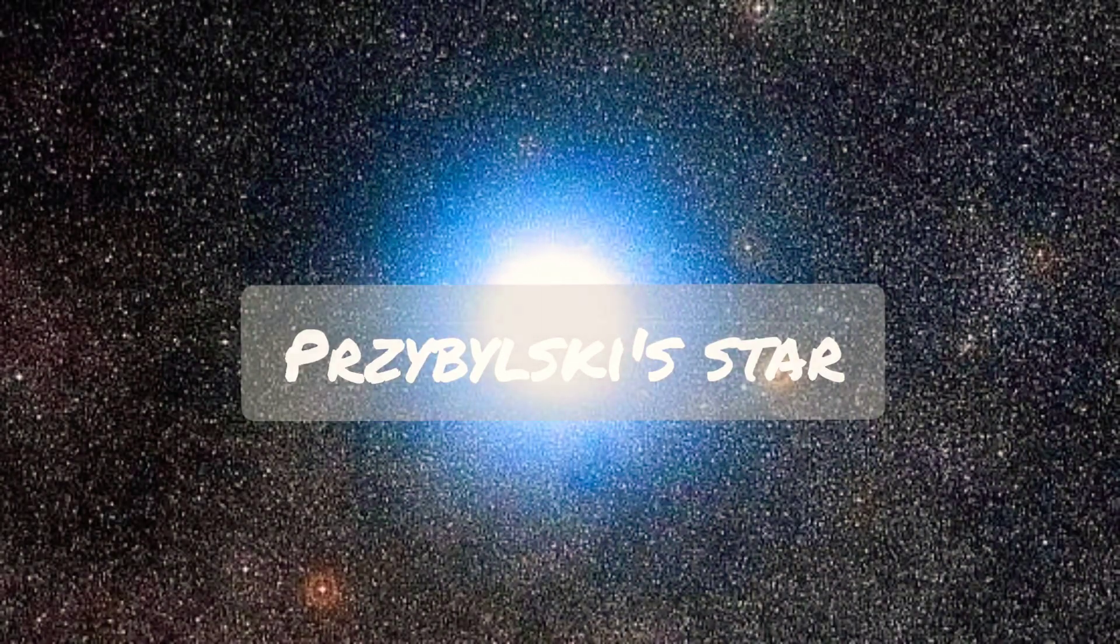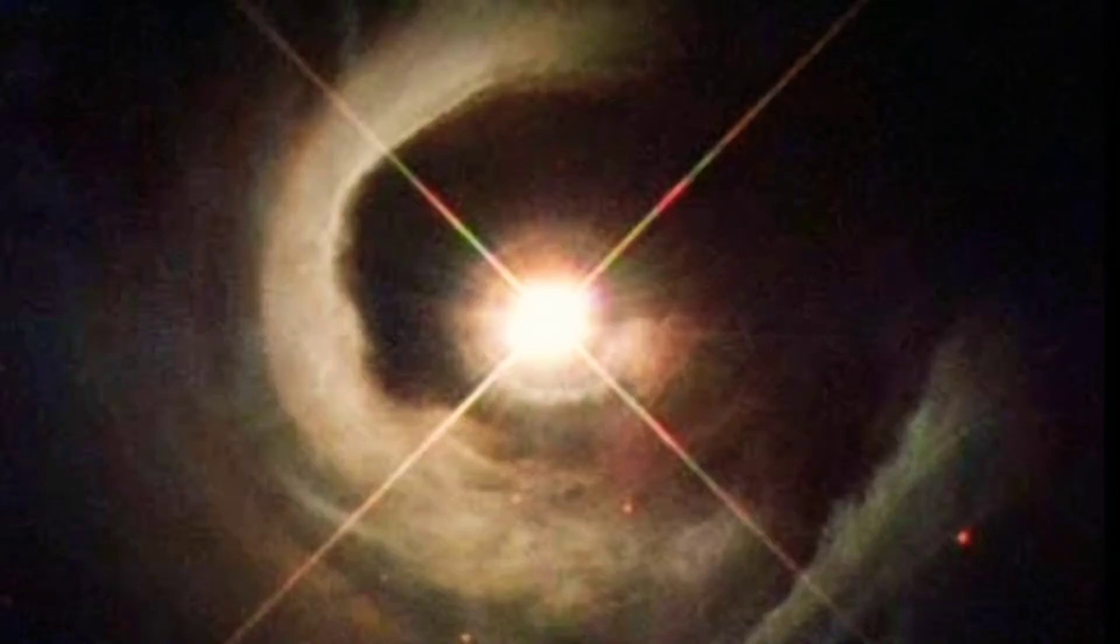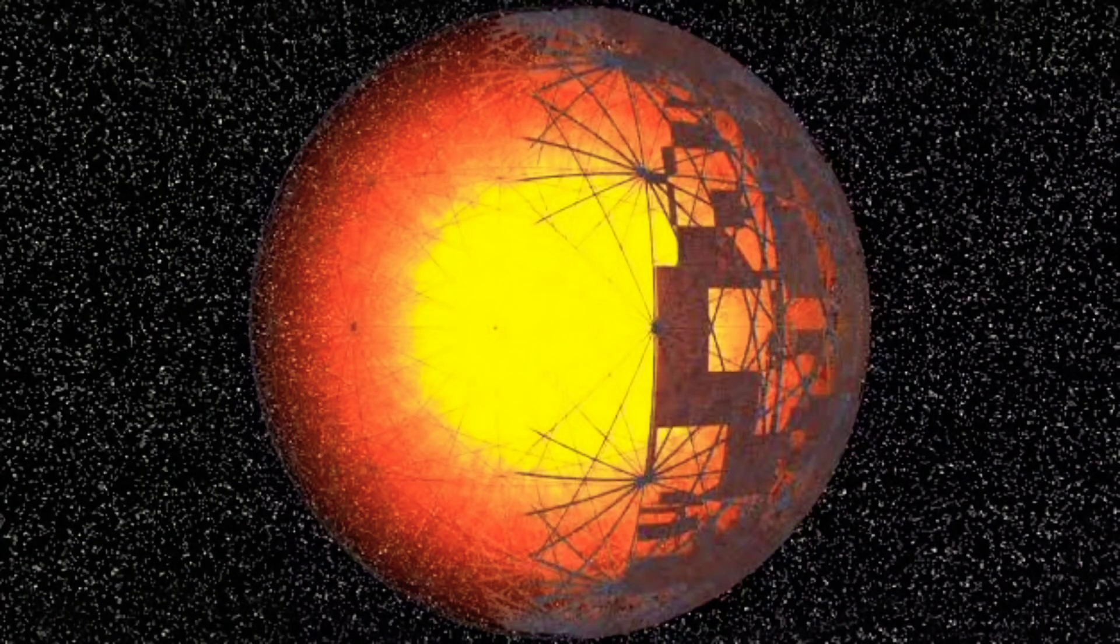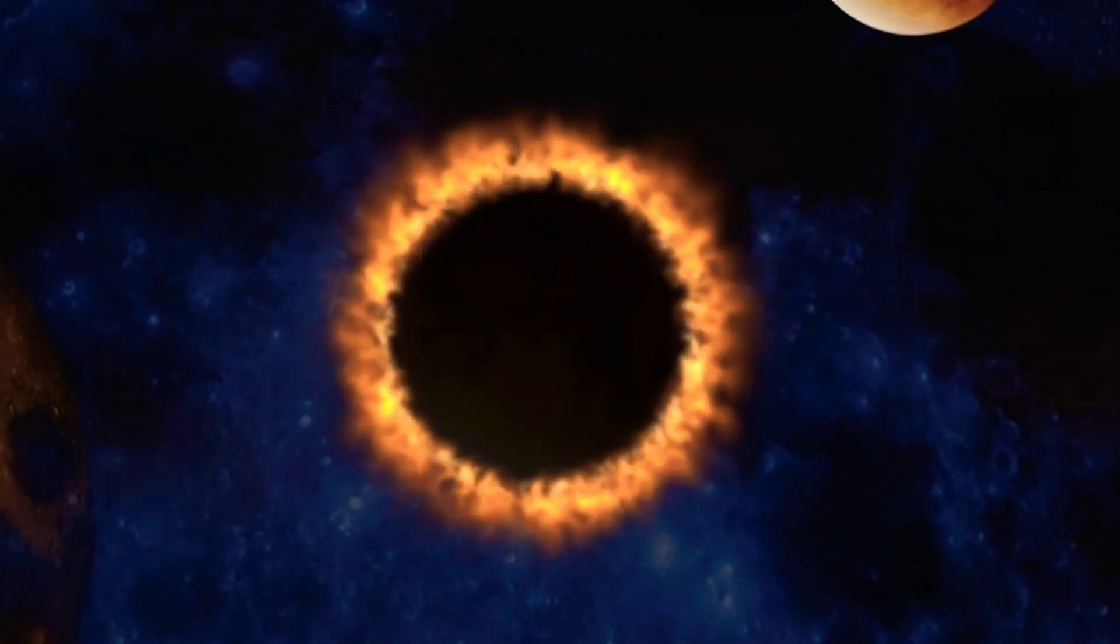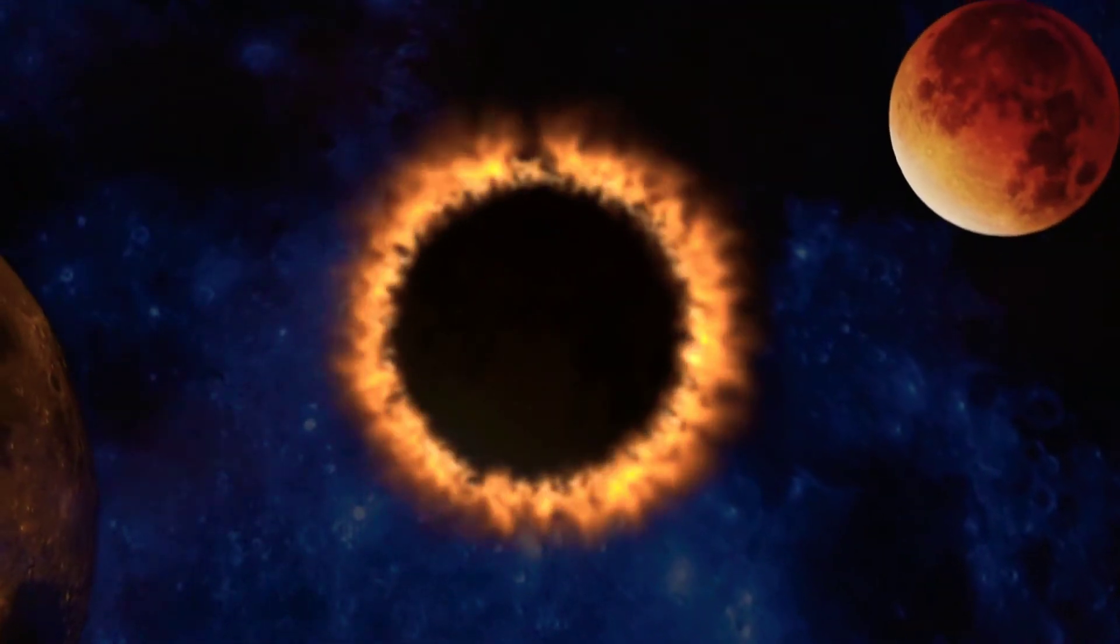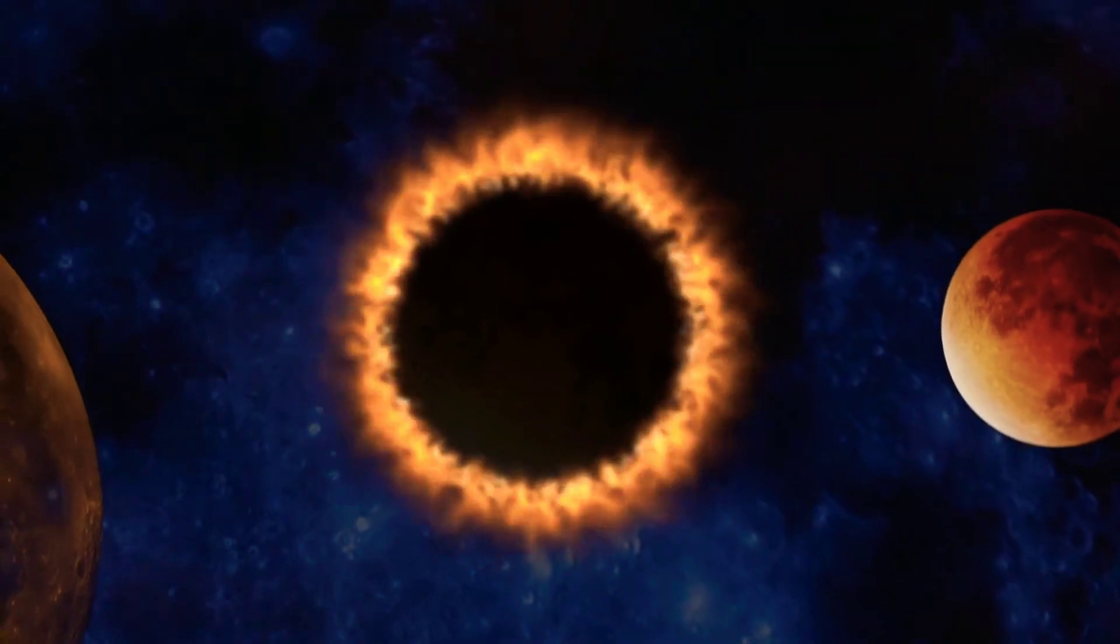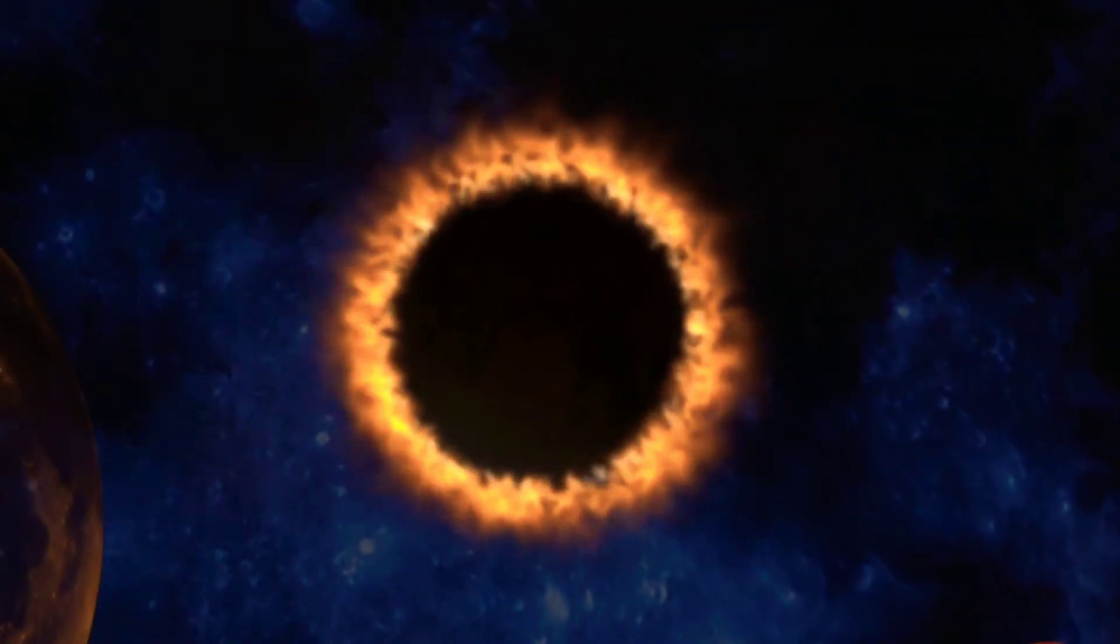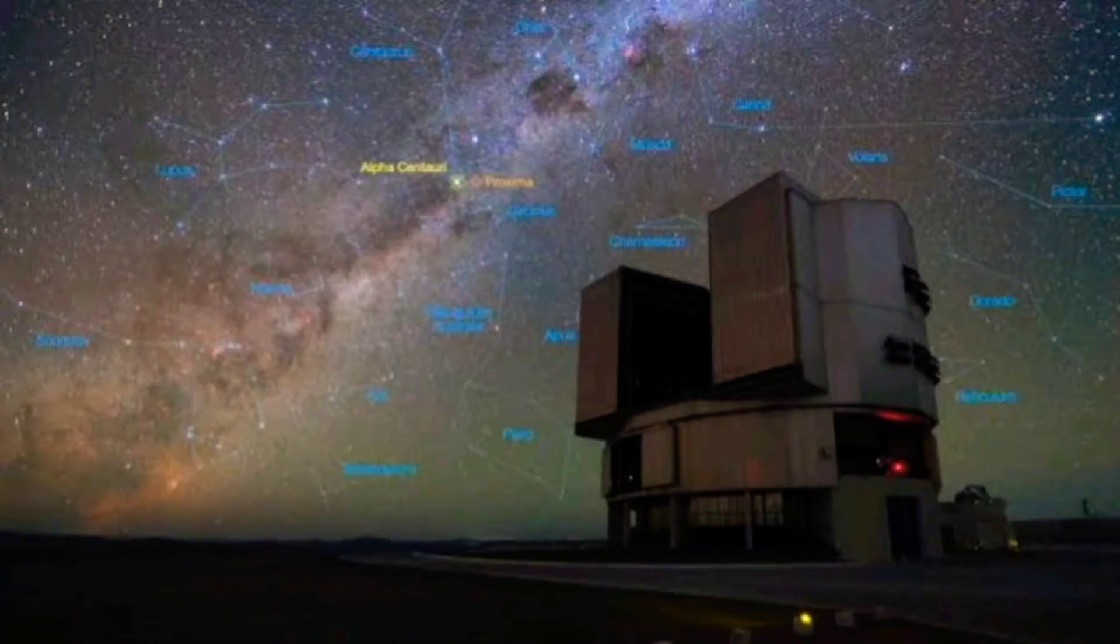Przybylski's star, or HD 101065, is a rapidly oscillating star about 4 times the mass of the sun, and at roughly 355 light-years from the sun, the closest neighboring star from our system, found in the southern constellation of Centaurus. Just beyond what our eyes can see is a truly weird star.